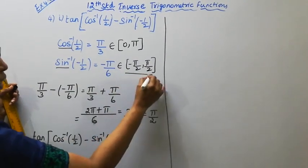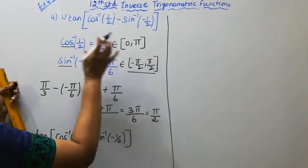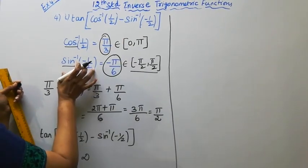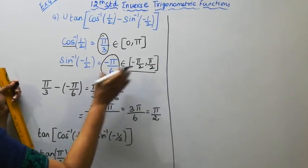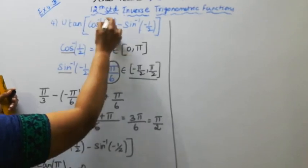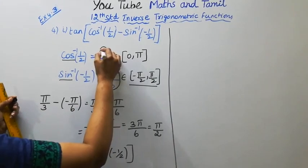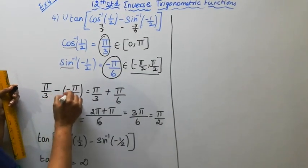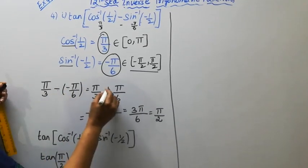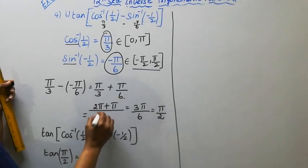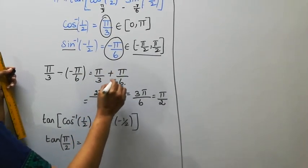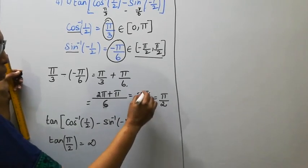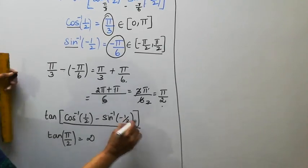So cos inverse of half equals π/3 and sin inverse of minus half equals minus π/6, conditions satisfied. Now: cos inverse of half minus sin inverse of minus half equals π/3 minus (minus π/6) equals π/3 plus π/6. LCM of 3 and 6 is 6, giving 2π/6 plus π/6 equals 3π/6 equals π/2.